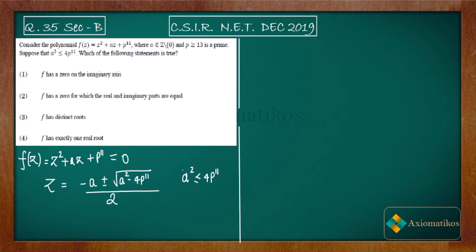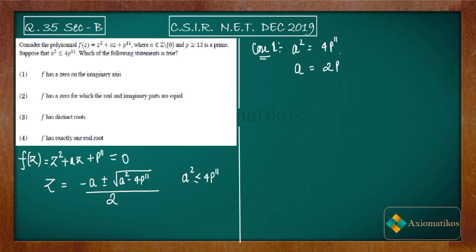From here two cases arise. Case one: if a² = 4p¹¹, then a = 2·p^(11/2). But p^(11/2) is not an integer — since p is a prime, p¹¹ is not a perfect square — so a cannot equal this value. This case is not valid for our problem.